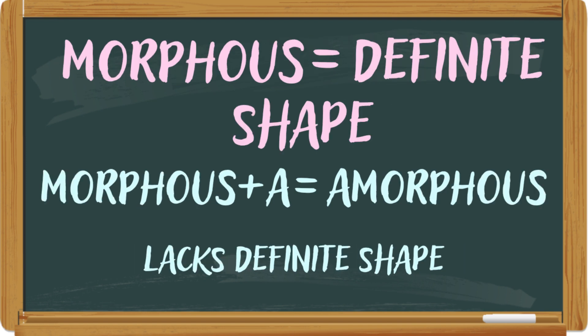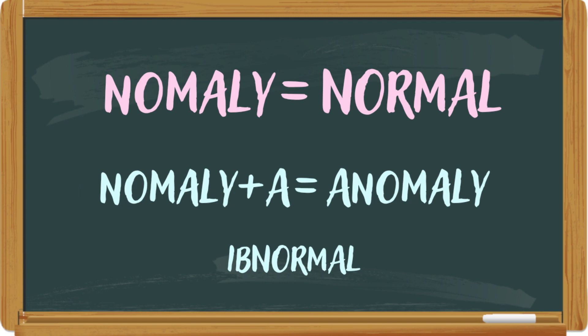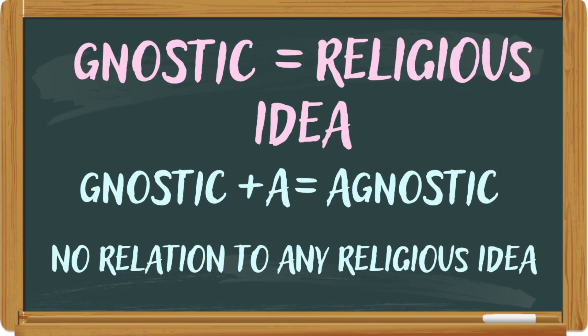'Morphous' means having a definite shape, while 'amorphous' is something which lacks a definite shape. 'Normal' refers to someone who is standard, while 'anomaly' refers to someone or something that deviates from the normal — someone who is not normal. 'Gnostic' is someone who is associated with a certain religious idea, while 'agnostic' is someone who is not associated with that religious idea.